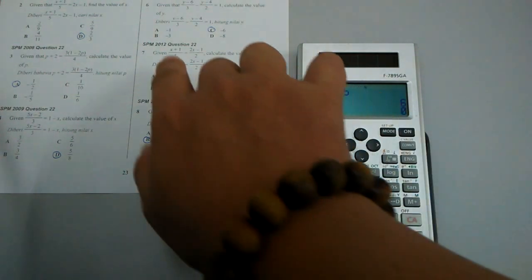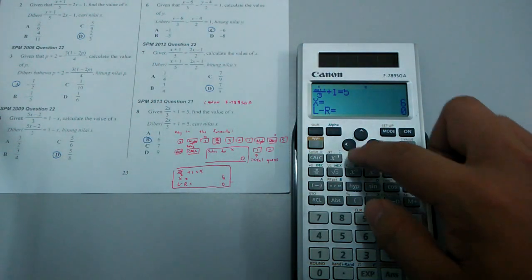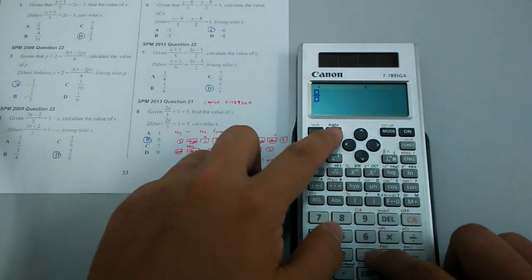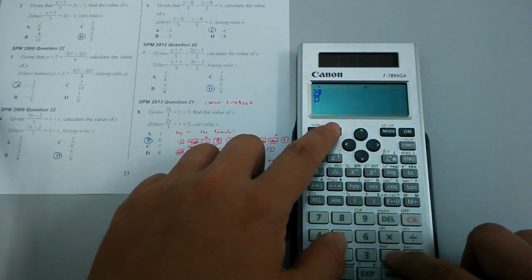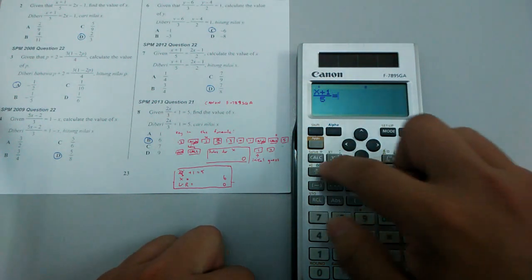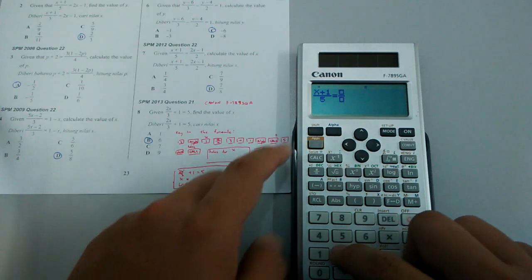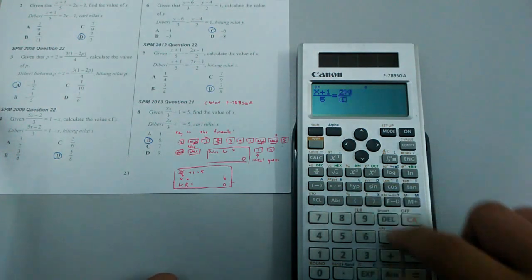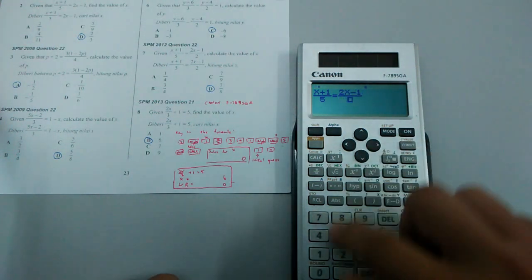Now I'll show you a more complicated question. I have alpha x plus 1 over 5 alpha equal to 2 alpha x minus 1 over 2.